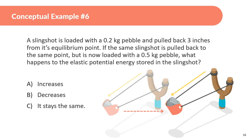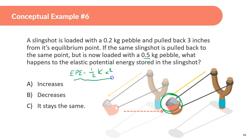Same slingshot, same stretch of 3 inches, but now loaded with a 0.5 kg pebble instead of 0.2 kg. What happens to elastic potential energy? Since EPE = ½kx² and mass is not part of the equation, the elastic potential energy stays exactly the same. Mass does not affect elastic potential energy.